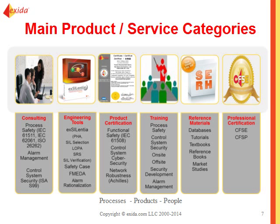Our main products and services are consulting in IEC 61511, IEC 62061, and ISO 26262, alarm management, and control system security. We have engineering tools, product certification in functional safety and 61508, control system cyber security, and network robustness. We offer training in process safety, control system security, security development, and alarm management — we can come to you or you can come to us.